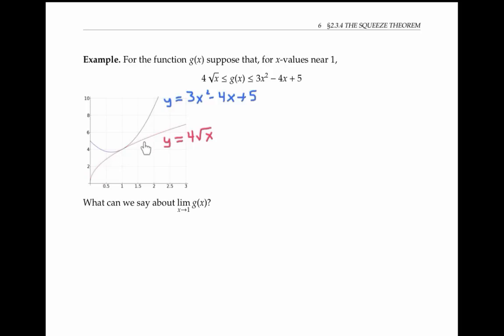g of x is greater than or equal to four times the square root of x, drawn here in red, and less than or equal to three x squared minus four x plus five, drawn here in blue. So on the picture, g has to lie between the red and the blue curves for x values near one, it could look something like this.